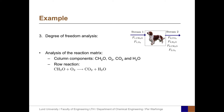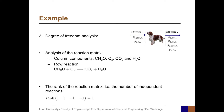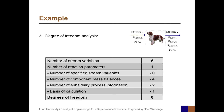The first step in the degree of freedom analysis is to analyze the reaction matrix. The components are CH2O, O2, CO2, and H2O, and there is one reaction, giving a matrix with one row and four columns. The rank of the reaction matrix is 1. Proceeding: the number of stream variables is 6, we have one reaction parameter, no specified stream variables, four component mass balances, two subsidiary process conditions, and one basis of calculation. The degrees of freedom equal 0.